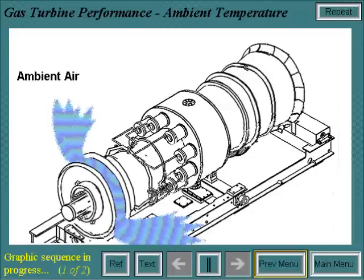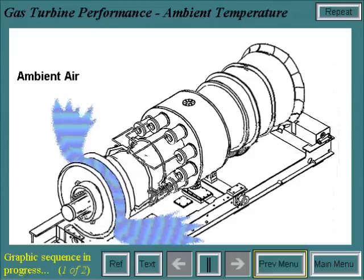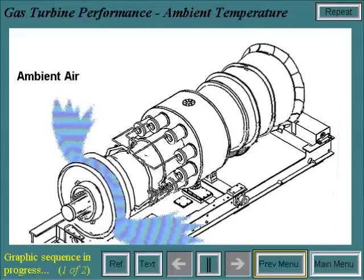Since the gas turbine is an ambient air-breathing machine, its performance will be changed by anything affecting the mass flow of the air intake to the compressor. The most obvious are changes in the reference conditions of 59 degrees Fahrenheit and 14.7 PSIA.